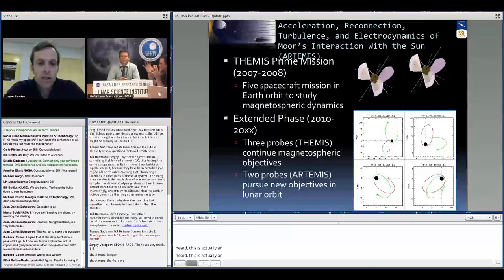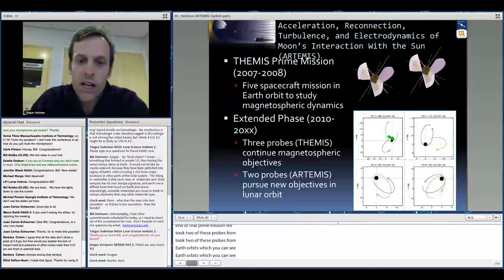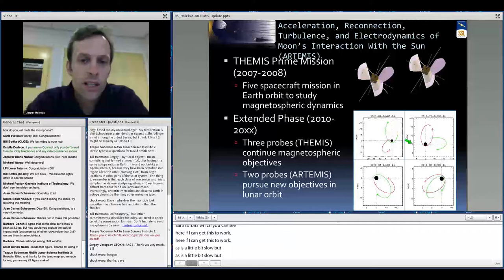This is the extended mission of a magnetospheric mission that was originally called THEMIS. At the end of that prime mission, we took two of these probes from Earth orbits and took them out to these lunar orbits, which you can see here if I can get this pointer to work. These are the kind of orbits that they're in right now.